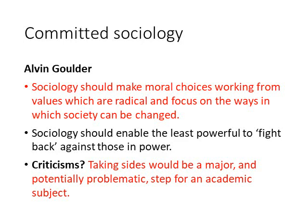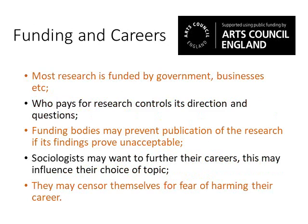Gouldner said that sociology should make more choices, working from values which are radical, and focus on the ways in which society can be changed — very much in a Marxist vein, believing it wasn't just about interpreting the world but changing it. Sociology should enable the least powerful to fight back against those in power, so that knowledge becomes a tool by which the powerless can challenge the powerful. However, taking sides in the way Gouldner advocates would be a major step for an academic subject. It could be problematic: staking a disciplinary claim might harm funding, support, and recognition in wider society.